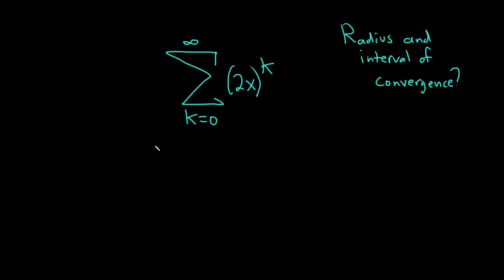In this problem we have to find the radius and interval of convergence of this power series. The way we're going to do this is we're going to use something called the geometric series test. The geometric series test says if you have something like a times r to the k, and we can start this sum anywhere — let's start it at 0 so that it matches what we have in the problem.